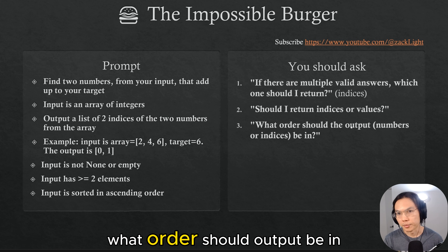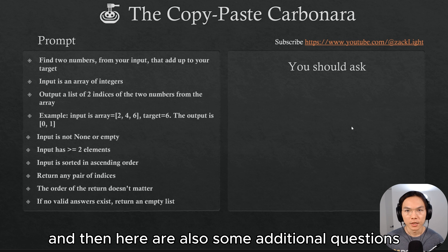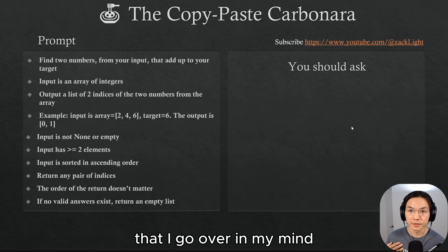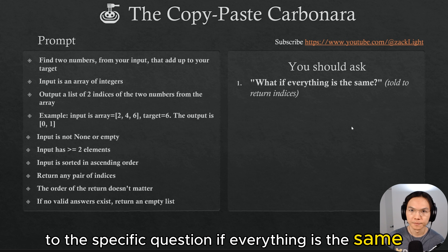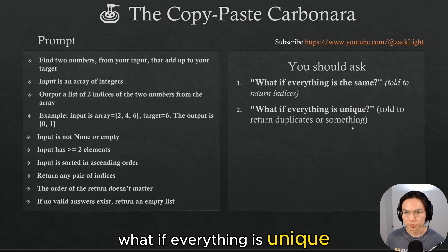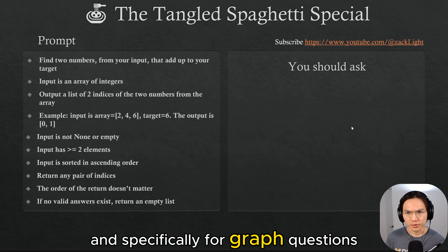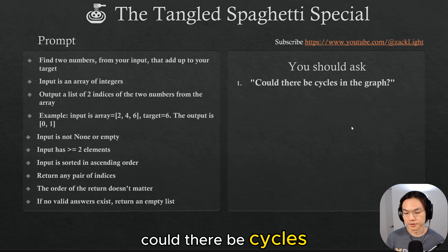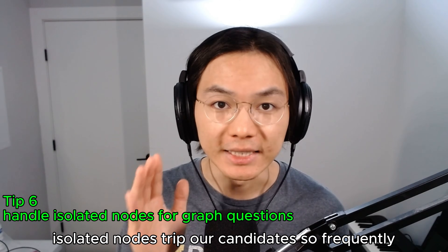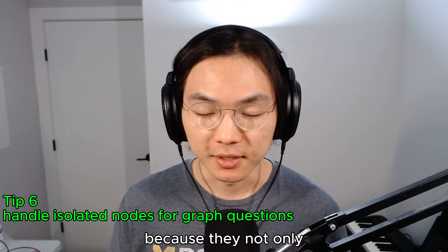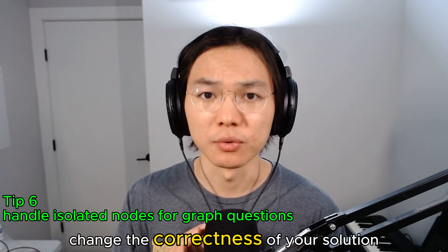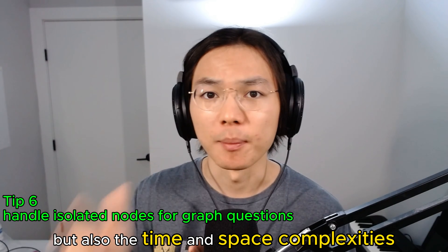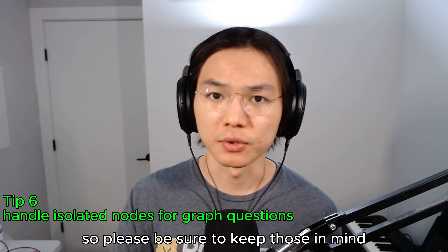What order should the output be in? Here are also some additional questions I go over in my mind, even though they may not be applicable to every specific question: what if everything is the same? What if everything is unique? And specifically for graph questions, we also have some interesting edge cases — could there be cycles? What about isolated nodes? Isolated nodes trip up candidates so frequently, because they not only change the correctness of your solution, but also the time and space complexities. So please be sure to keep those in mind.